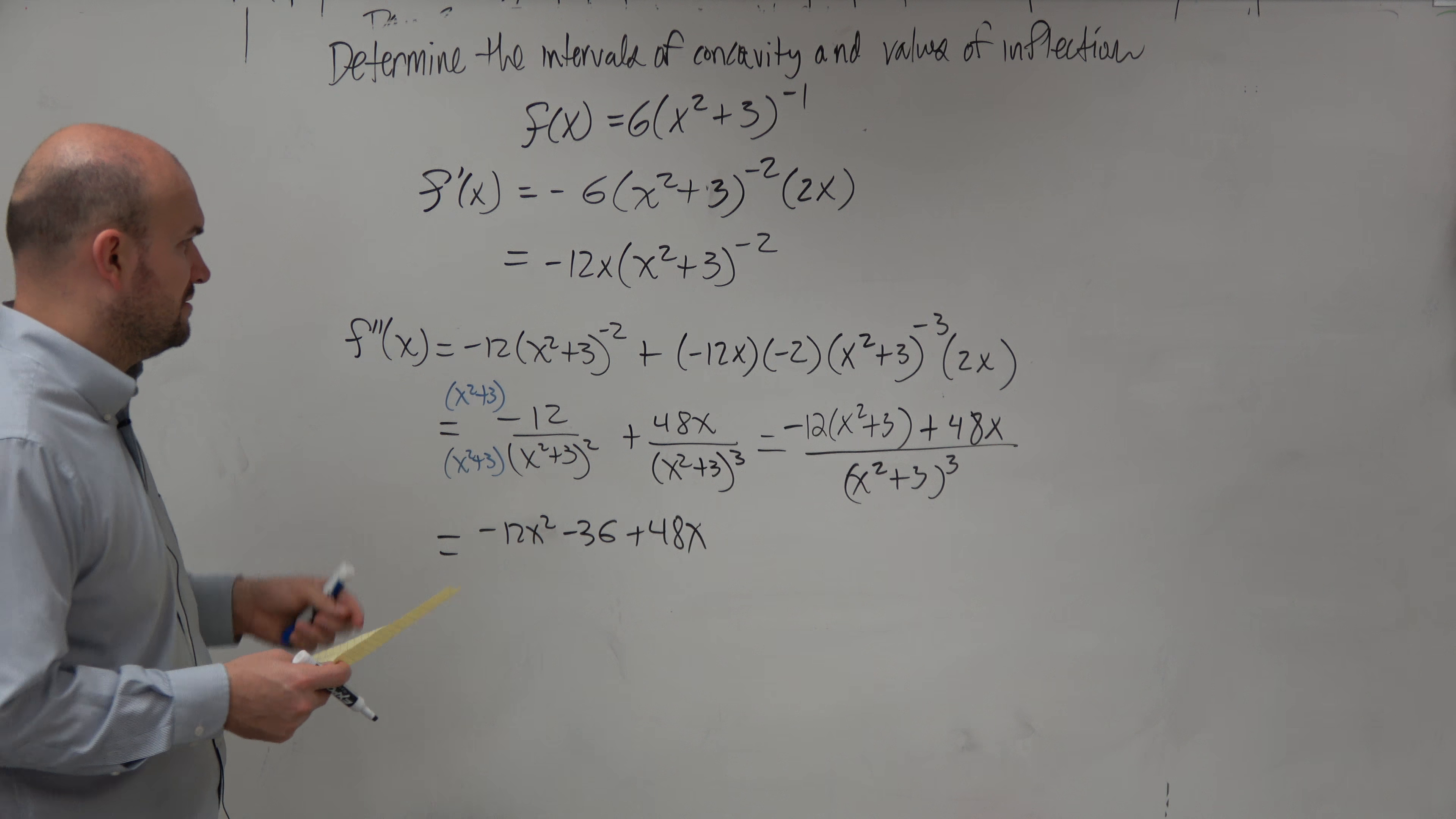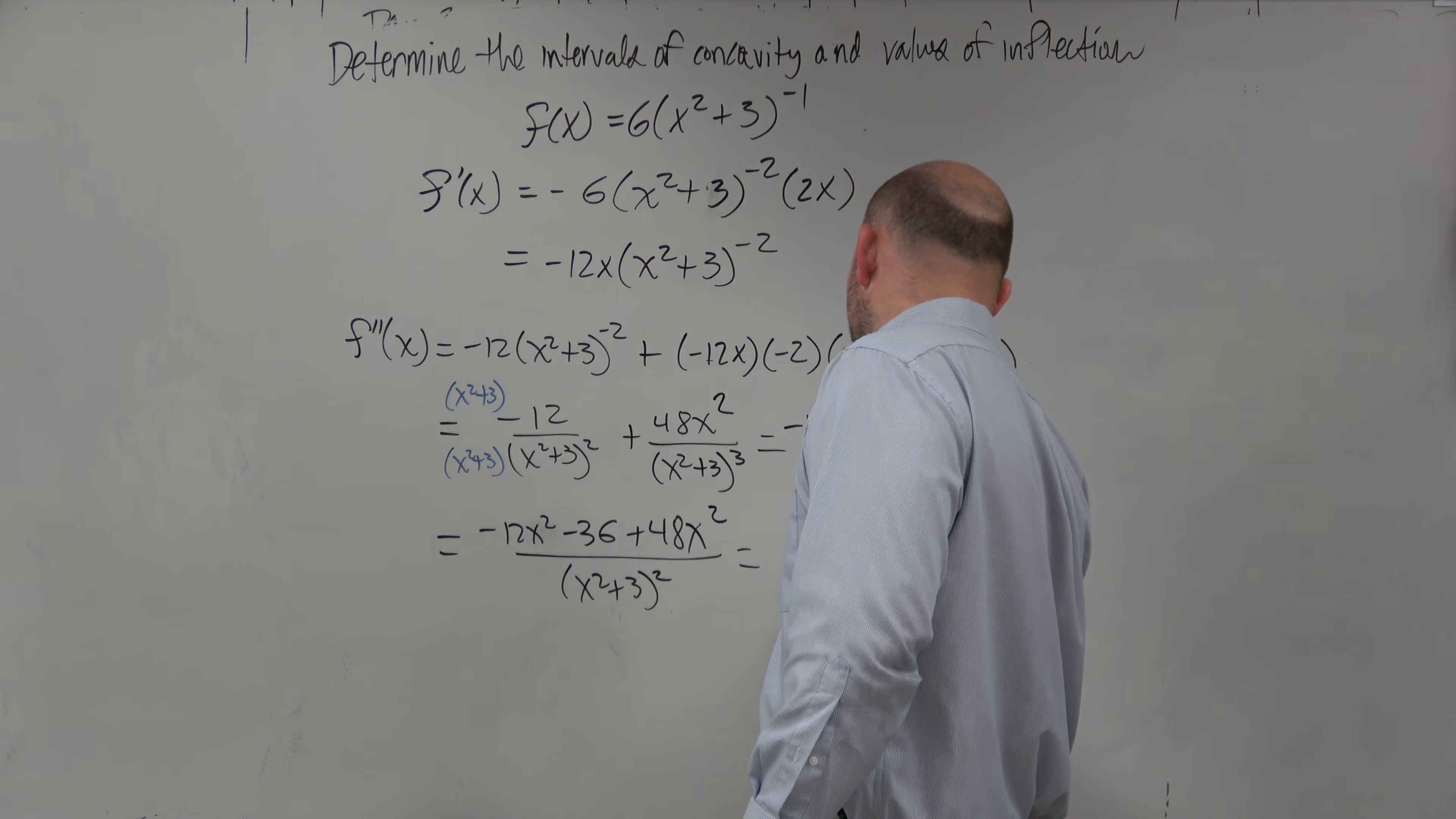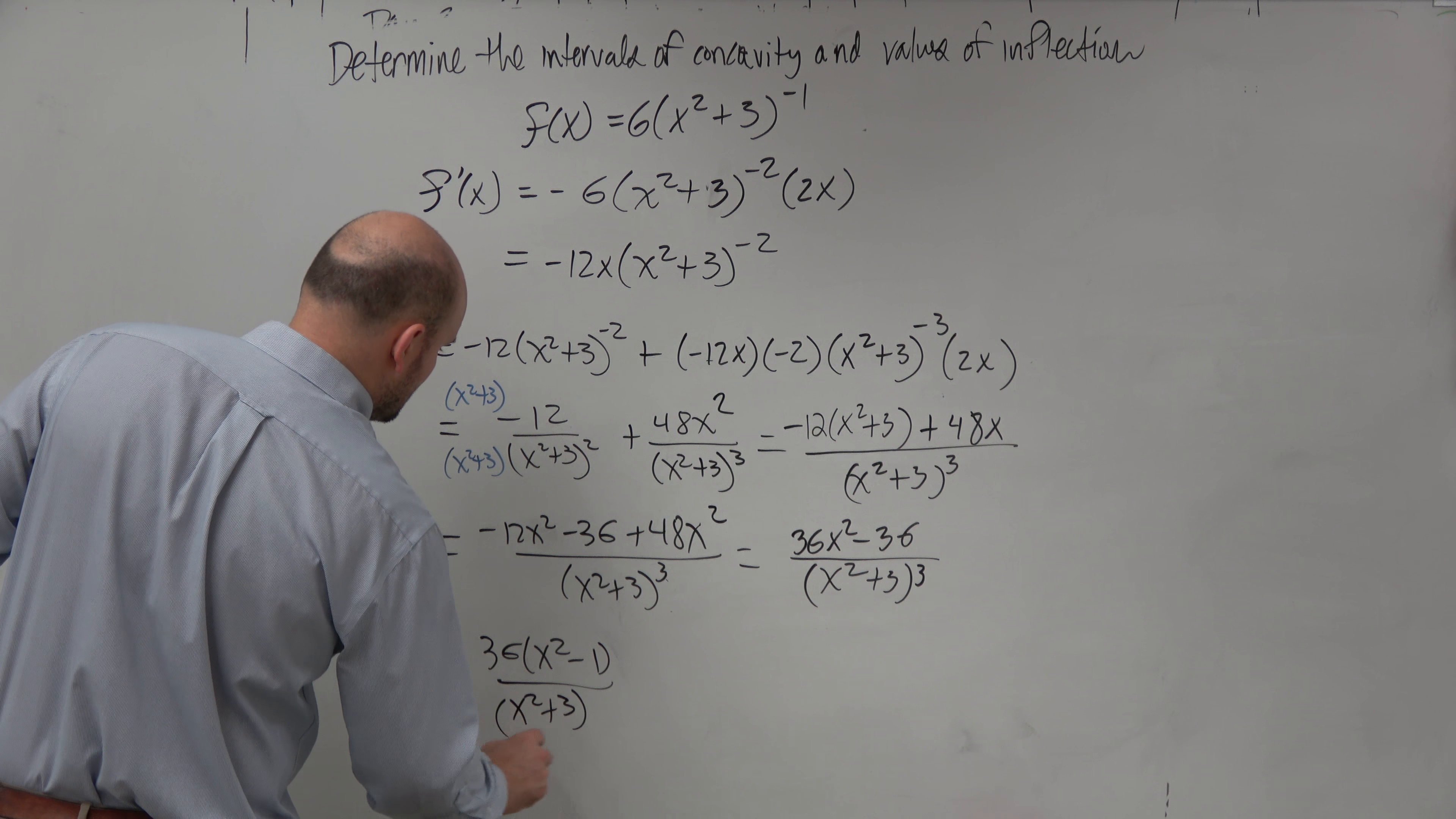The x and the x are combined, right? I forgot to multiply these x's. You guys see how x and x would give you x squared? I knew there was something else I was missing. All over x squared plus 3 cubed. This simplifies here to 36x squared minus 36, all over x squared plus 3 cubed. Which we could simplify one last time, factor out of 36, which is 36 times x squared minus 1, all over x squared plus 3 cubed.